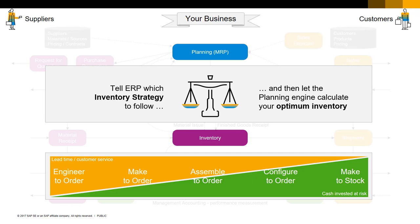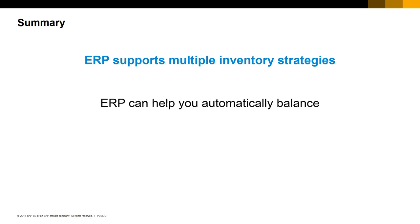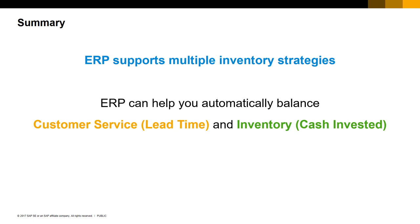In summary, a good ERP system will help support multiple different inventory strategies, depending on what you need to run your business. The planning system can help you automatically balance between those two powerful but opposing forces: customer service, in the form of customer lead time, and inventory, in the form of cash invested. This is literally the balance between time and money. These inventory strategies include make to stock, configure to order, assemble to order, make to order, and engineer to order.